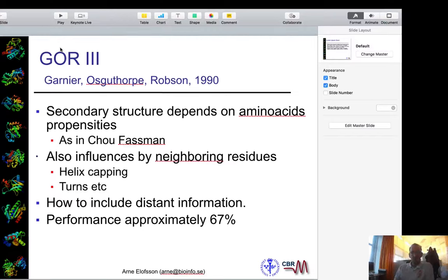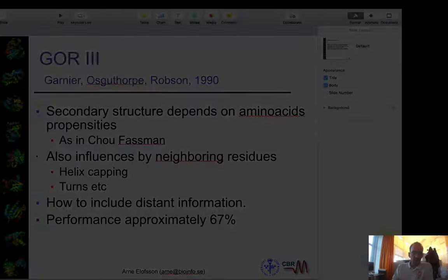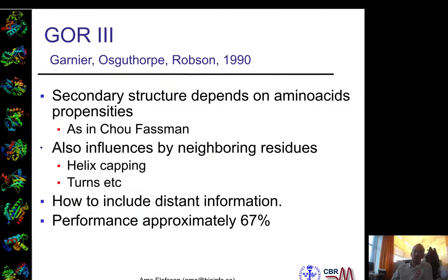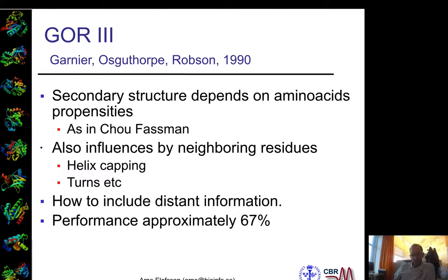The first method that was actually developed and useful was the GOR method by Garnier, Osguthorpe, and Robson. It was developed in the 90s, and it's quite easy to understand — it's the basis for most methods developed later. It depends on amino acid properties.